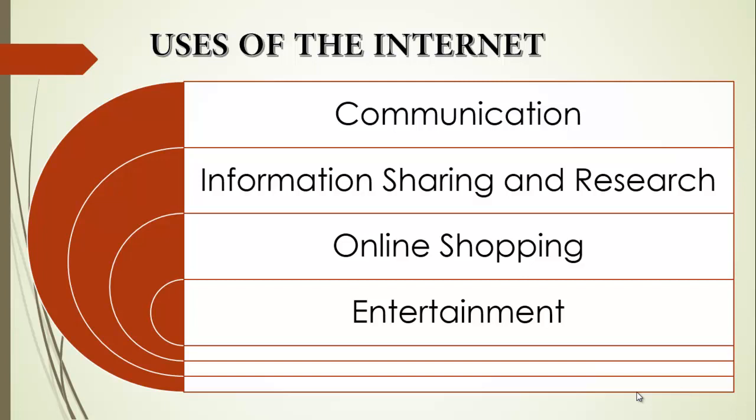We now move to the uses of the Internet. The Internet is used for a wide variety of things and has become an integral part of our lives. Number one is communication — the Internet has revolutionized communication, enabling people to connect with others around the world instantly through email, instant messaging, and social media. Another use is information sharing and research — the Internet provides a vast repository of information on virtually any topic, making research and learning more accessible than ever before.